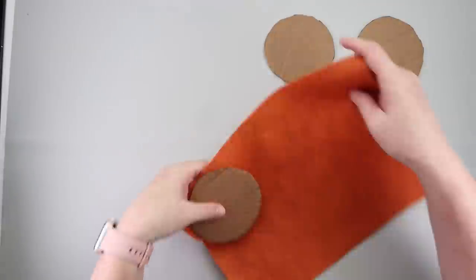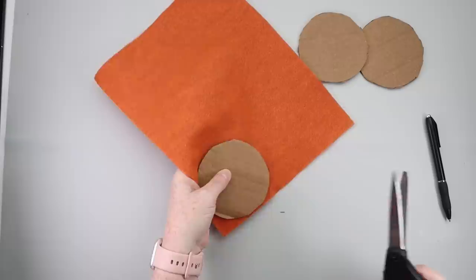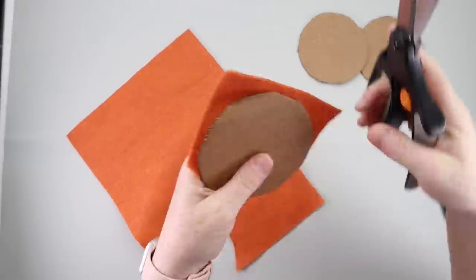From there I grabbed a piece of orange felt and I just kind of set it on top of the circle and then using my fabric scissors just trimmed around it so that those pieces would fit on top of the cardboard.